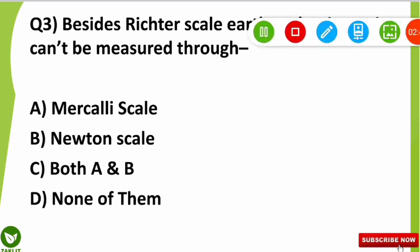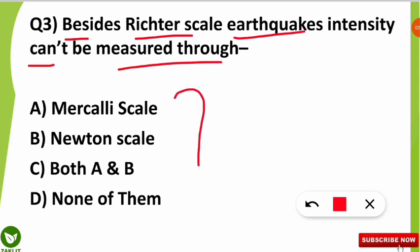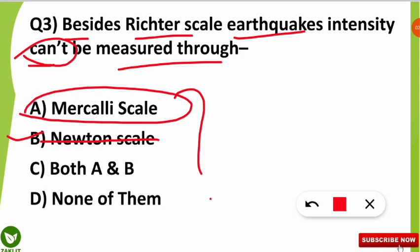The third question was very interesting and complicated — many of you got it wrong. The question was: besides the Richter scale, earthquake intensity cannot be measured through which of the following scales? The key word is 'cannot.' The correct answer is option B — through the Newton scale we cannot measure earthquake intensity. With the Mercalli scale or Modified Mercalli scale, and the Richter scale, we can measure earthquake intensity.